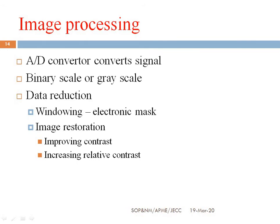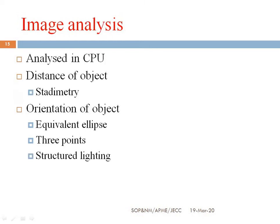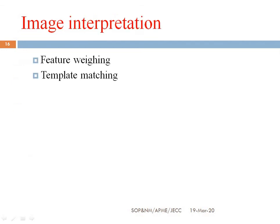The next step is image processing. The input from the image acquisition system is converted as per requirements using an analog-to-digital converter — converting signals to binary scale or grayscale. Data reduction involves windowing, electrical masking, or image restoration — improving contrast and relative contrast. In image analysis, the CPU analyzes the processed image for distance, object orientation, and other parameters. Finally, interpretation involves feature weighting and template matching — comparing outputs to produce the final result.